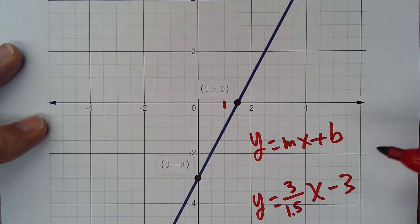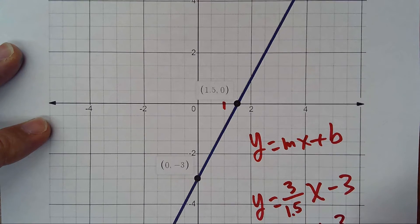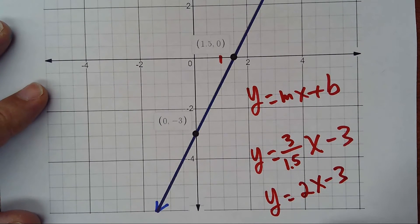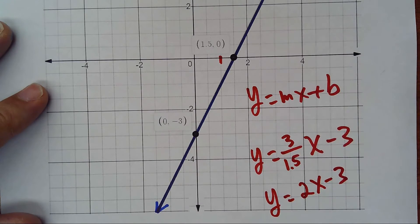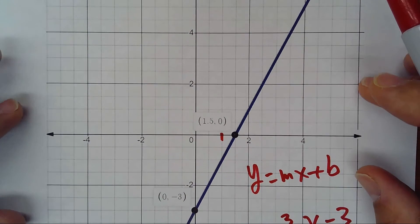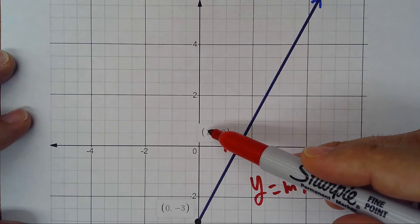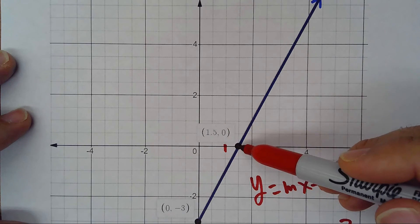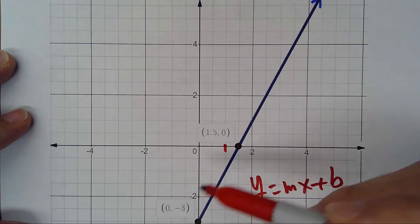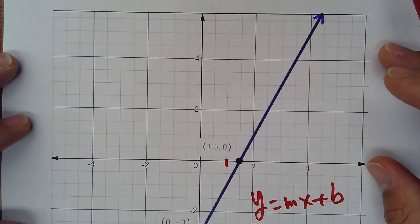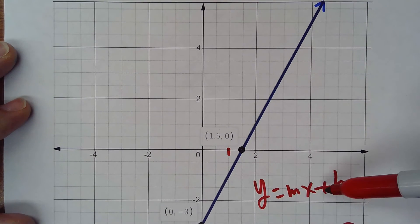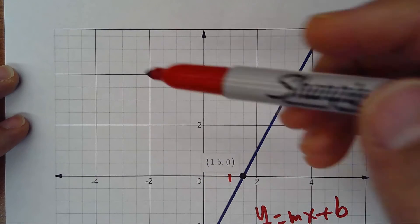So basically the equation will be 2x minus 3. This is the equation for this graph. Another way to do this is by using the intercept. I know that 1.5 is the x-intercept and -3 is the y-intercept. This is slope-intercept form; let's talk about the standard form.